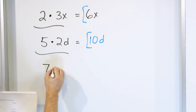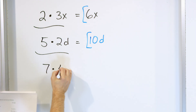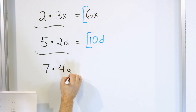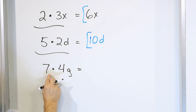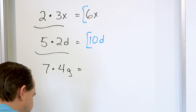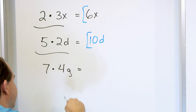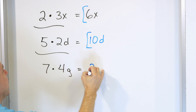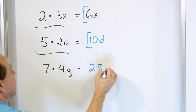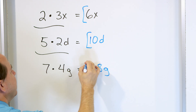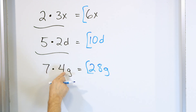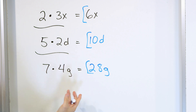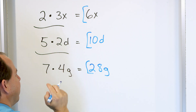What about 7 times 4g? We multiply the numbers, but the variable comes along for the ride. 7 times 4 is 28, so the answer is 28g. This means I had four golf balls, but then I multiplied that amount times 7, so now I have 28 golf balls.